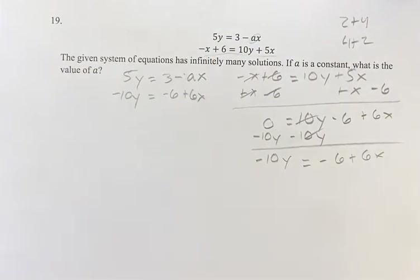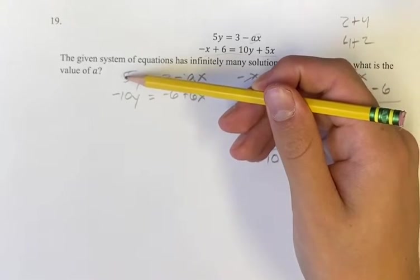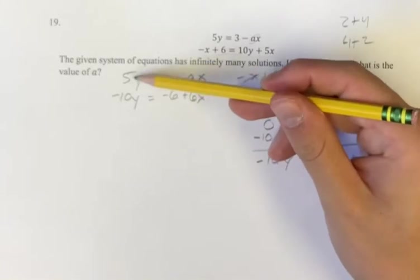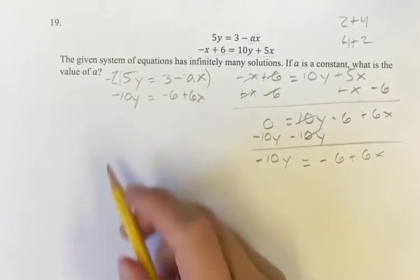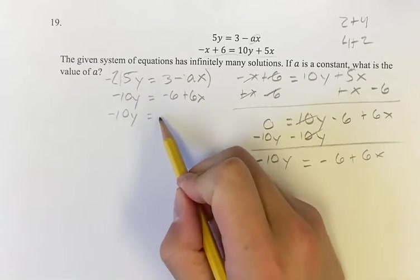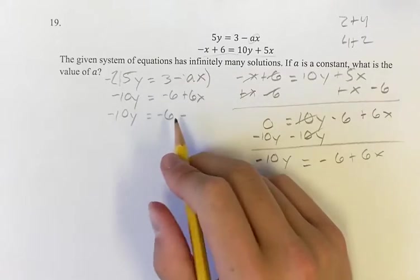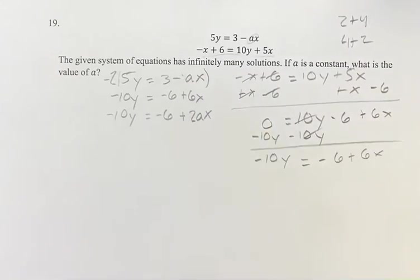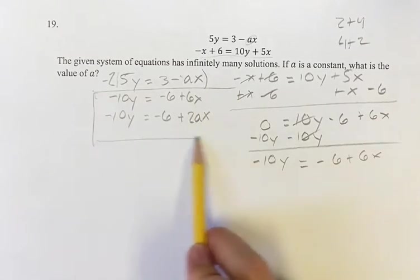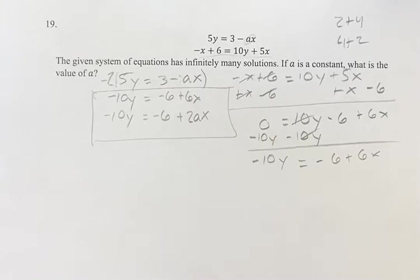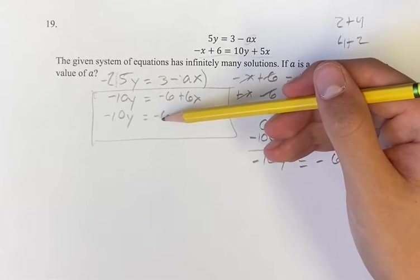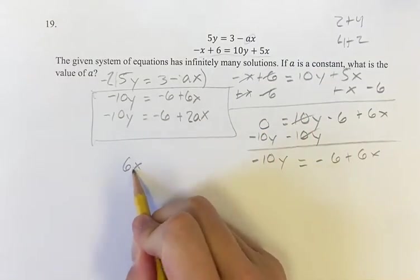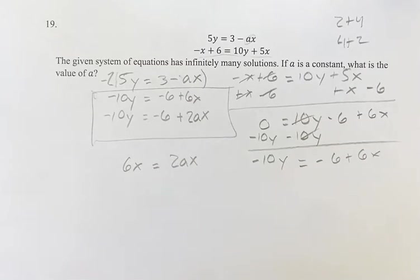And if these have infinitely many solutions, they're going to be the same exact equation. You'll notice they're actually really close. If we look at 5 and negative 10, 3 and negative 6 — what do these both have in common? If we multiply the first equation by negative 2 and bring it down, we have negative 10y is equal to negative 6 minus negative 2ax, which is the same as plus 2ax. Since these are the same equation, 6x has to equal 2ax for any x.